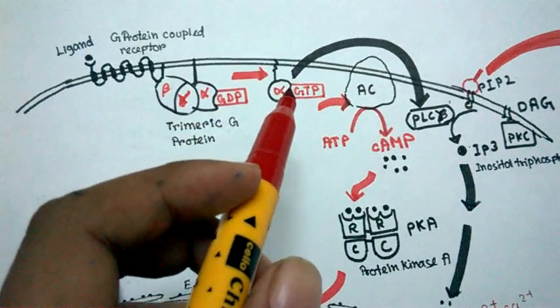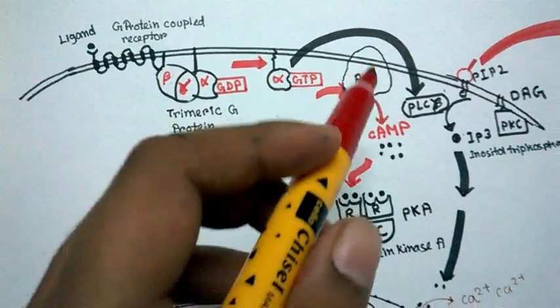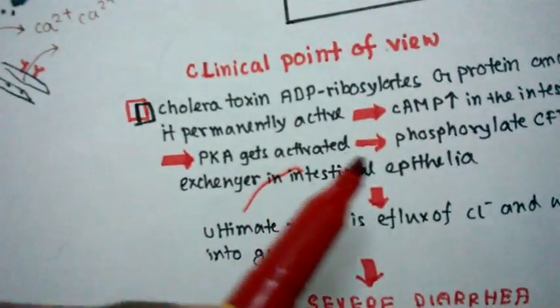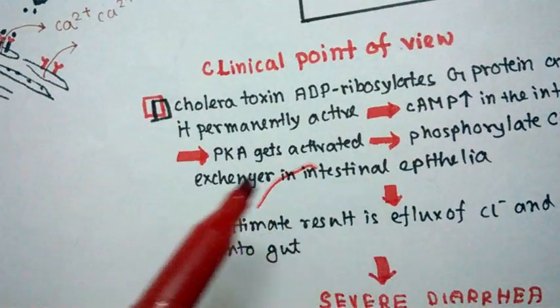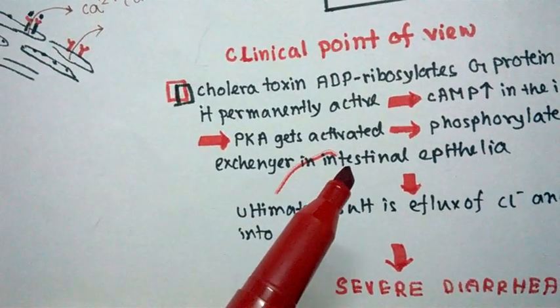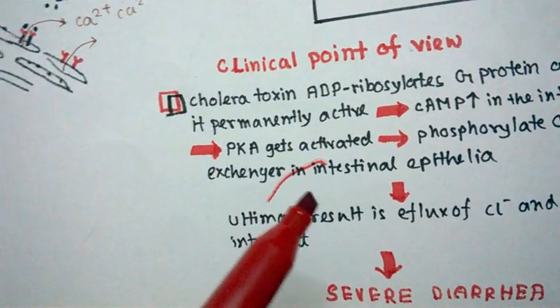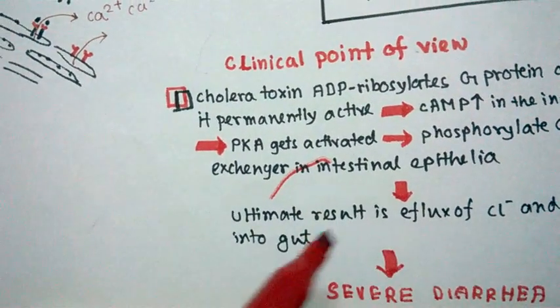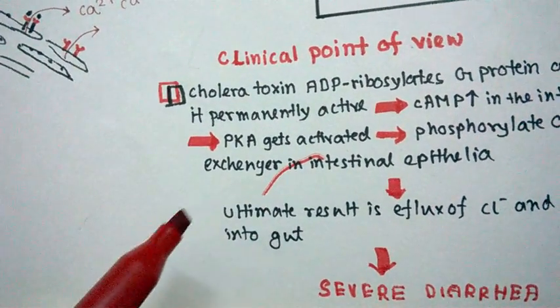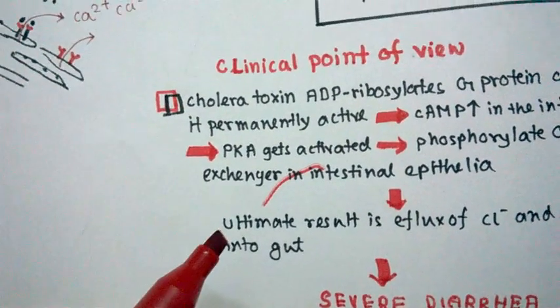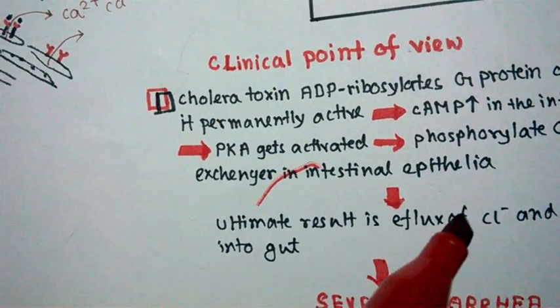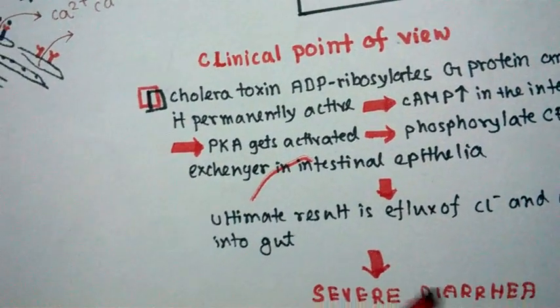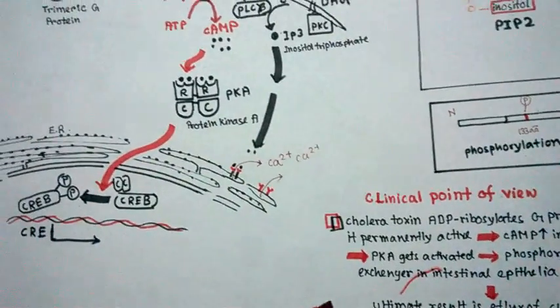Once it is constitutively active, all the downstream signaling pathways will be active. In cholera, the cyclic AMP level goes up and protein kinase activity increases. Protein kinase A phosphorylates the exchanger of sodium and hydrogen in the intestinal epithelia and also phosphorylates CFTR. The ultimate result is the efflux of sodium, chlorine ion, and water into the gut, which results in severe diarrhea.